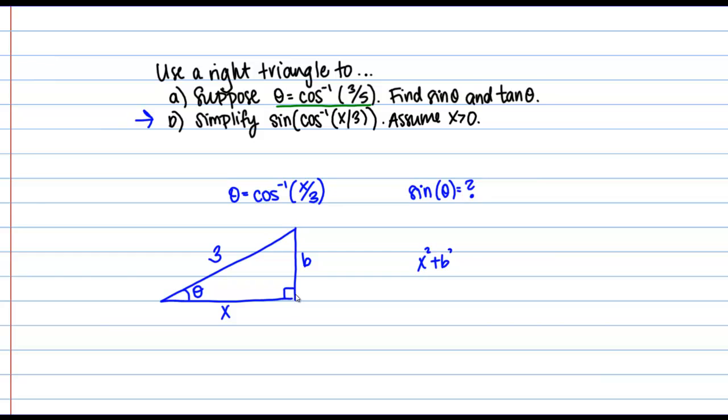So I have X squared plus B squared equals 3 squared, and I'm going to solve this for B. So I get B squared equals 9 minus X squared, and then I take the square root to get B equals the square root of 9 minus X squared. And notice I'm taking the positive root here.